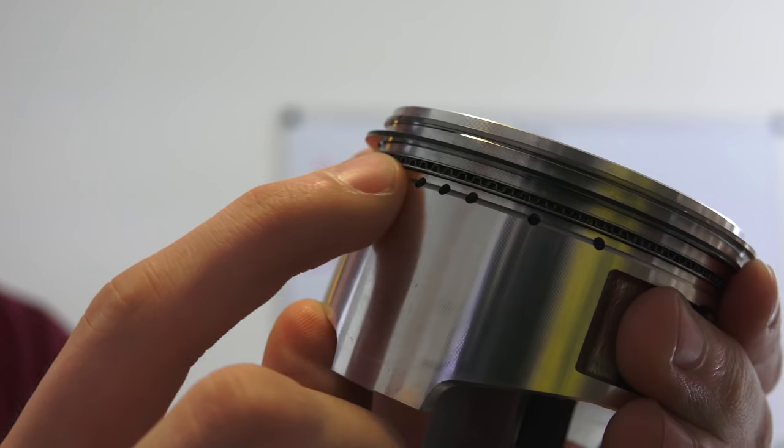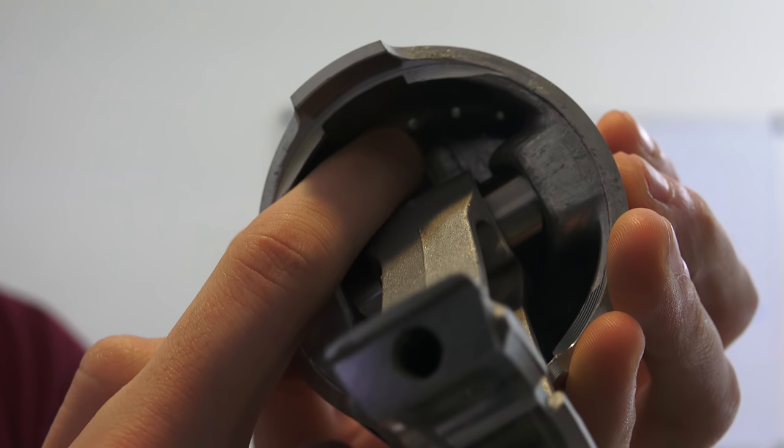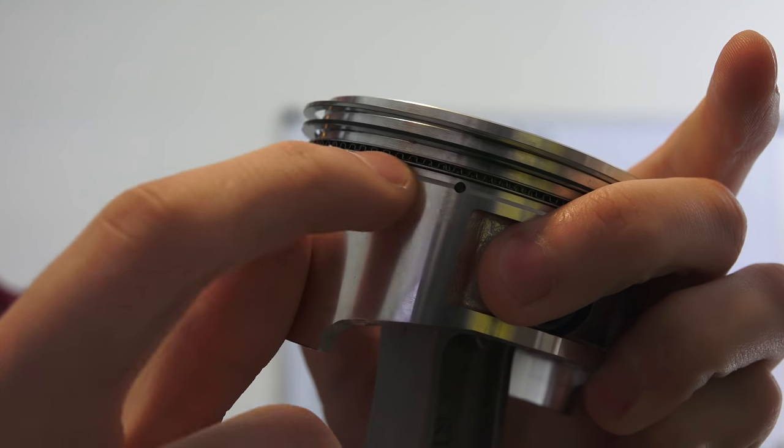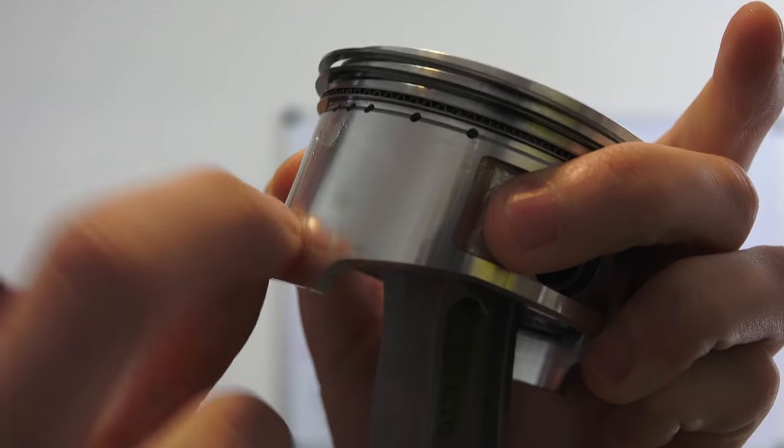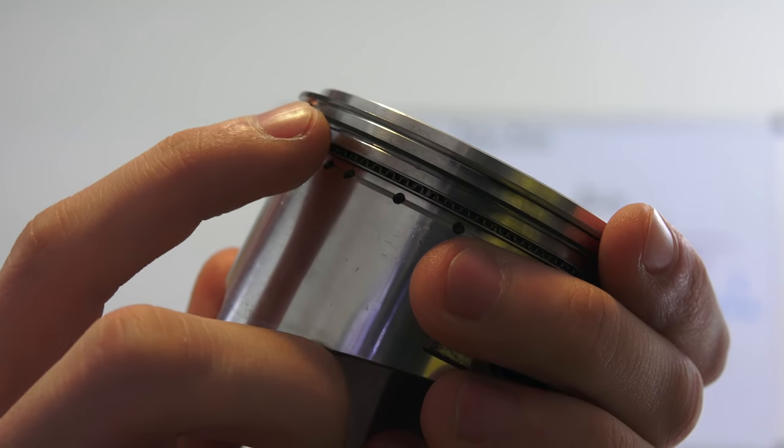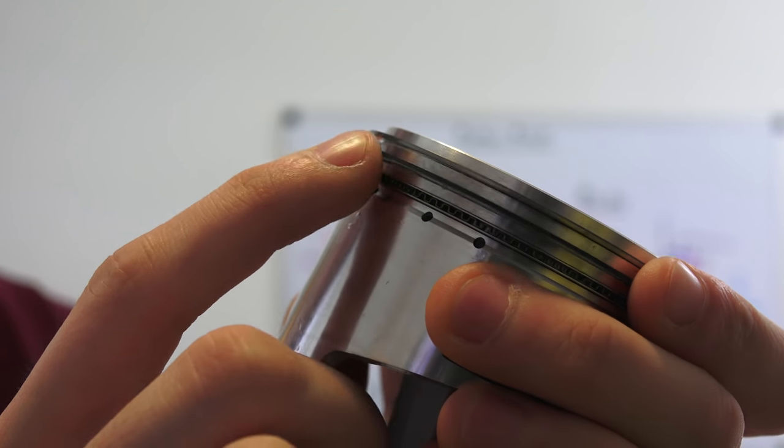What those holes are for is they're going to actually pass that oil through the piston back into the crankcase. It'll scrape it down on the walls and that oil that gets scraped on the walls will pass through these holes and fall back into your crankcase. This middle ring is going to be helping to scrape oil on the walls and also helping to seal the chamber for compression.